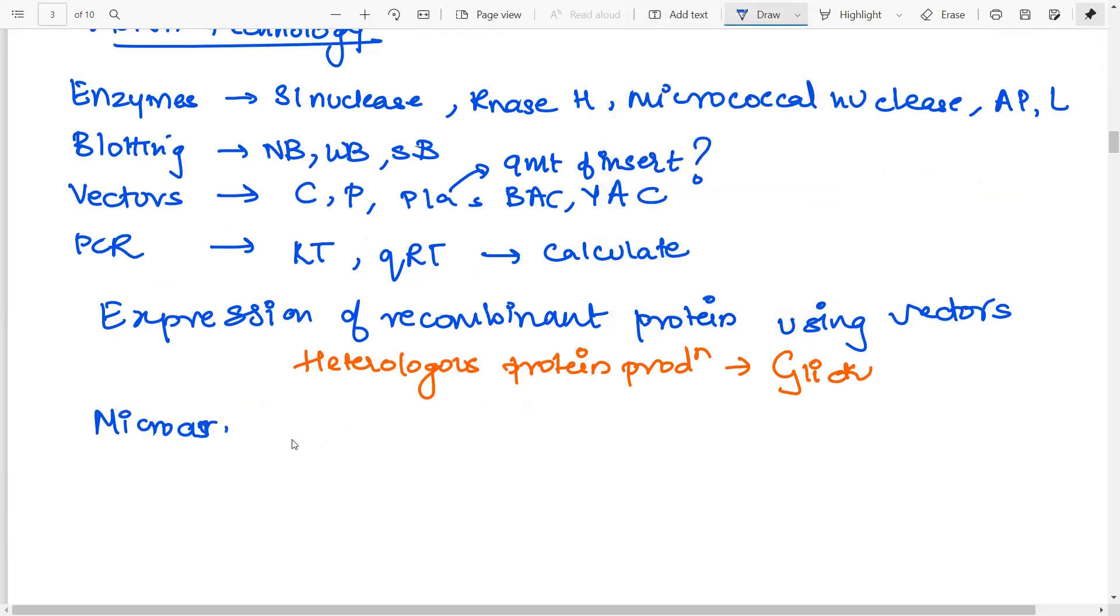Then you have microarray, DNA polymorphisms. Now, for polymorphisms, obviously, you require some markers. So, you need to do all of those. Then you have to do RFLP, RAPD, and AFLP. Then development of SCAR and SSR markers. So, that is all you need to do from rDNA technology.